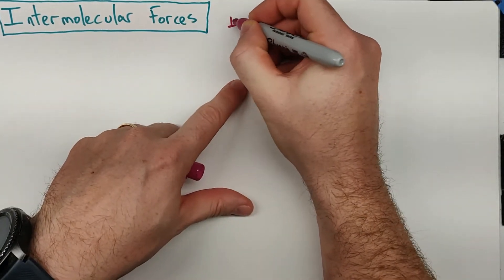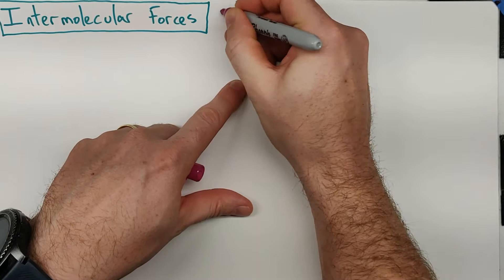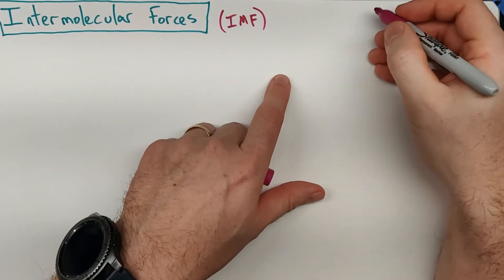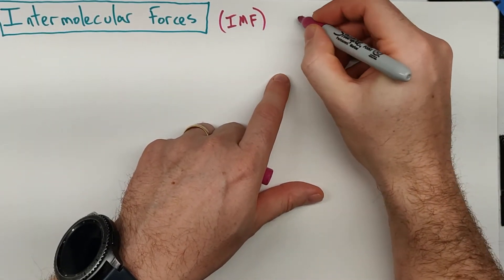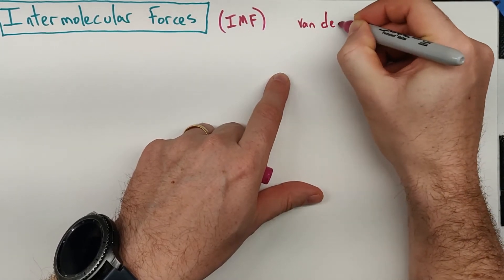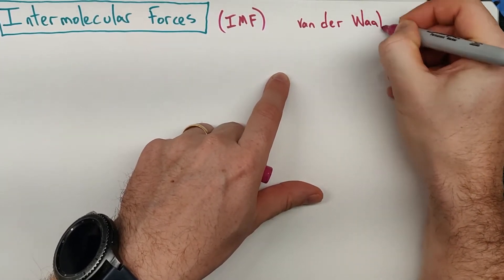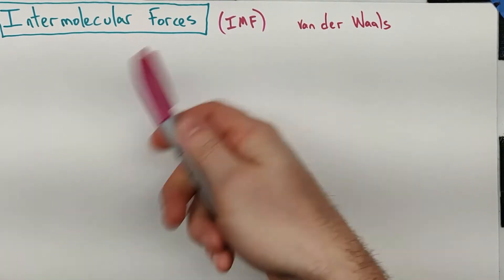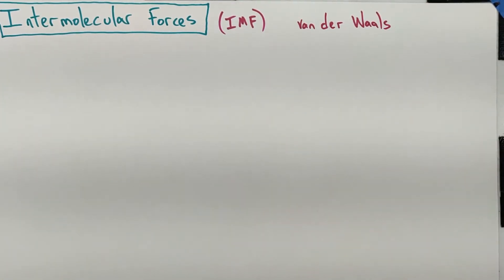I'll commonly abbreviate intermolecular forces IMF, because it's a lot of things to write. You may also see them in textbooks and in other places as Van der Waals forces. Anyway, so if you see that terminology, that's where it's coming from. I'll use IMF almost every single time.